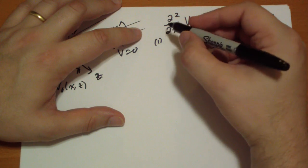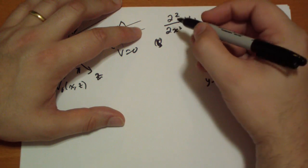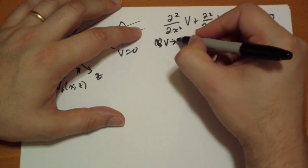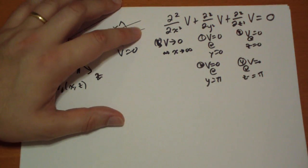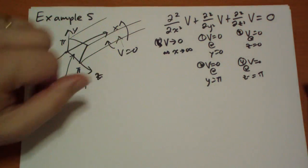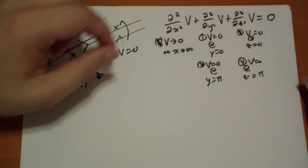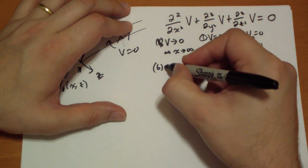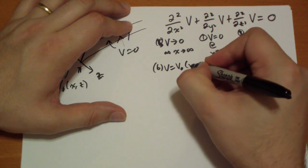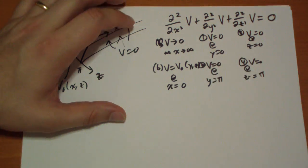And over here we have one condition, five, is v tends towards zero as x tends towards infinity. That's just looking down the pipe at the end. The potential is going to be zero. No matter what you do here, eventually it's going to reach zero at the end. And the final condition is that v has to equal v-naught of y, z at x equals zero.